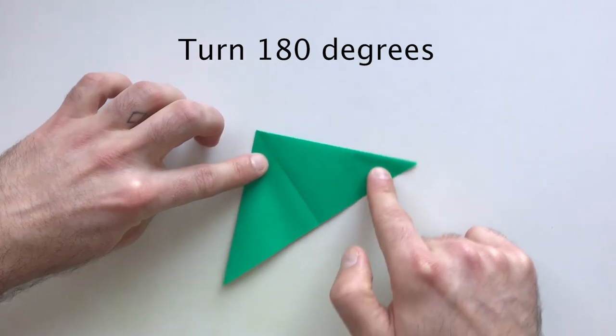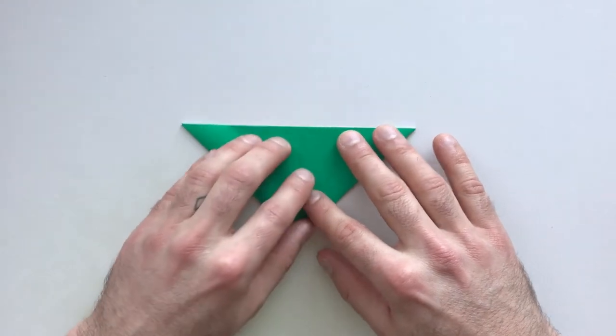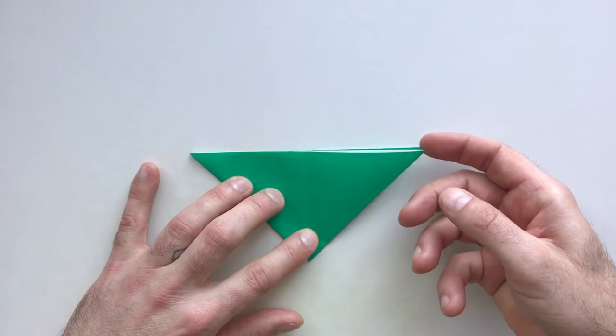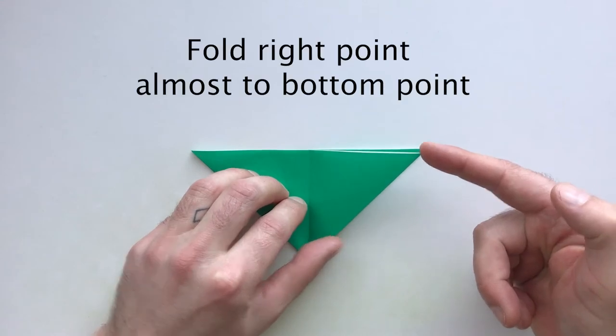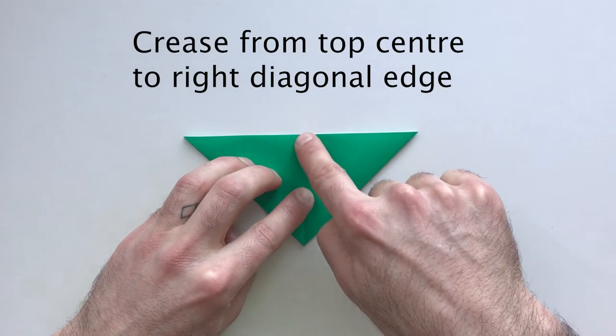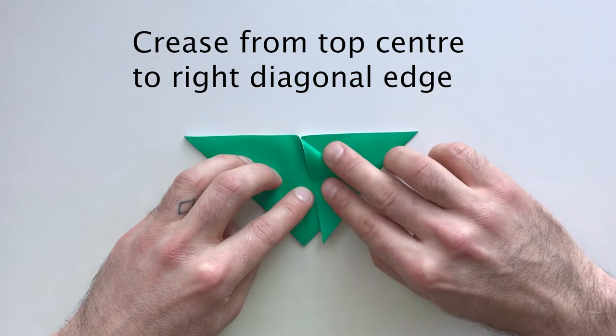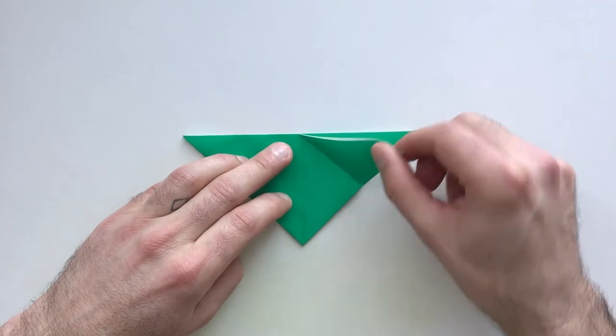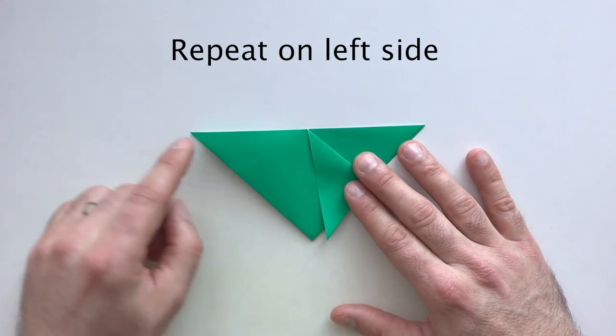Now turn 180 degrees so this point is facing towards you. Then take the top layer on the right and fold this point almost down to the center point, making a crease from the top center down to this edge like so. Repeat on the left.